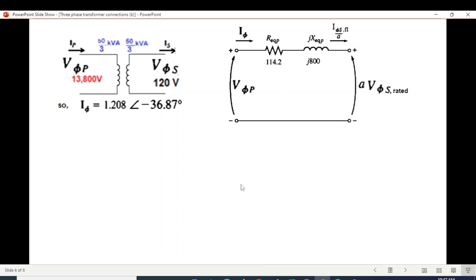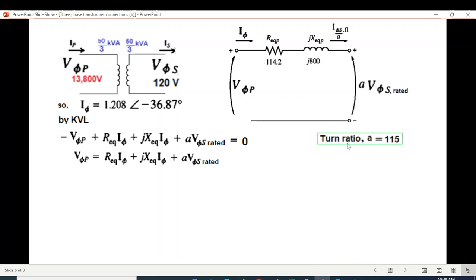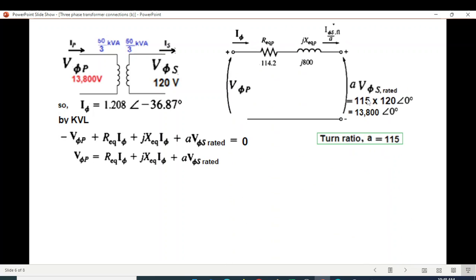We have current value. We can account by KVL the equation. So V phase P among all the values, I multiply by R equivalent, I multiply by X equivalent, and plus A times V phase S. Turn ratio already we can calculate: 115. So A value is 115. Turn ratio and Vs is 120, so multiply by 120 angle 0. So A Vs is 13,800 at angle 0. I will write this equation.